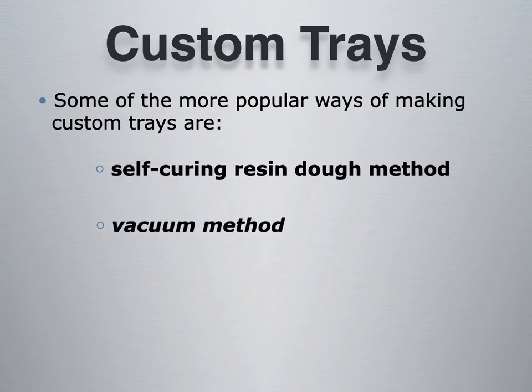There's also a vacuum method, sometimes called a suck-down machine, where a heating element heats a sheet of material until it droops and gets soft. The model sits on a plate with metal holes, the material is laid over the model, and suction and air pressure are used to adapt the material over the model to create your custom tray. This method is not as commonly used today.